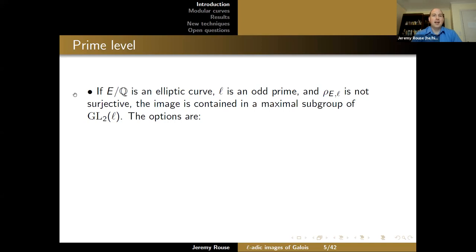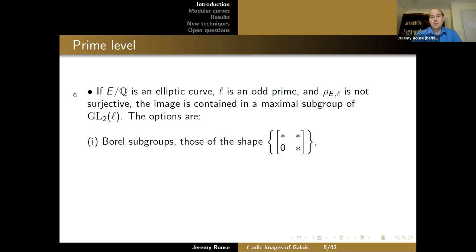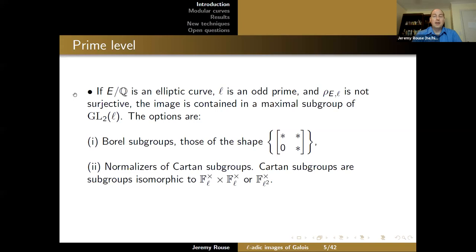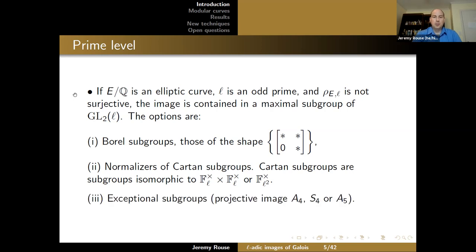In the prime level case, if E over Q is an elliptic curve, L is an odd prime, and rho_{E,L} is not surjective, then the image must be contained in a maximal subgroup of GL_2(L). The options are: Borel subgroups (upper triangular matrices mod L), normalizers of Cartan subgroups—where Cartan subgroups are isomorphic to either F_L* × F_L* or F_{L^2}*—and exceptional subgroups whose image in PGL_2 is isomorphic to A_4, S_4, or A_5.